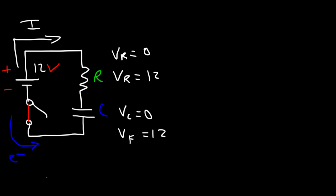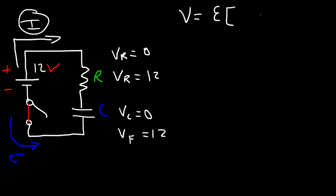At that point there's no current flowing through the circuit. Keep in mind that no current actually passes through the capacitor — the current that flows through the circuit is simply used to pump charge from one plate of the capacitor to the other. The equation that describes a capacitor charging is: V equals the EMF of the battery times (1 minus e) — where e is the inverse of the natural log function — raised to negative t divided by RC.